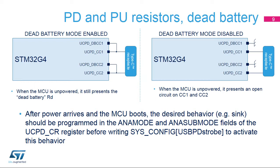When the UCPD is used for an upstream-facing port, the dead battery feature enables the UCPD to indicate to the peer node that it needs to be powered. This analog setting is functional even when the MCU power supply is switched off. This default behavior is configured by connecting the DBCC pins to the respective CC pins. After power arrives and the STM32G4 boots, the desired behavior should be programmed in the ANA mode and ANA sub-mode fields of the UCPD CR register, and then the USB PD strobe bit must be set to one in the SYSCFG register. Connecting DBCC pins to ground disables dead battery mode; in this case, the peer DFP cannot distinguish a dead battery state from an unattached state.